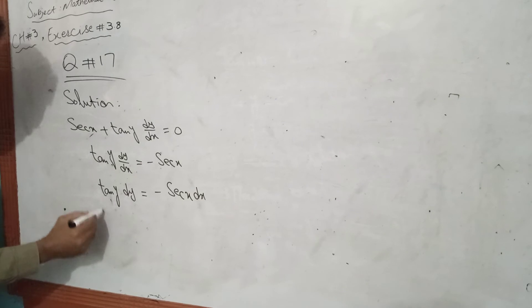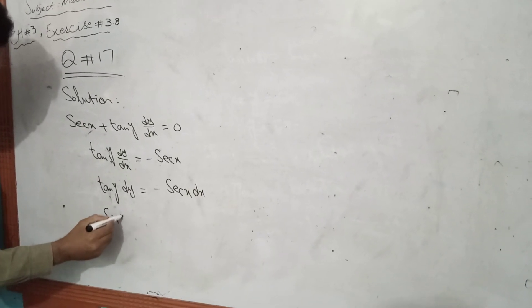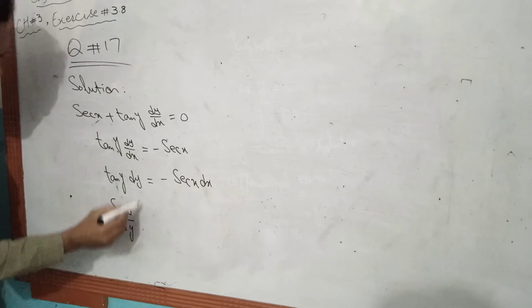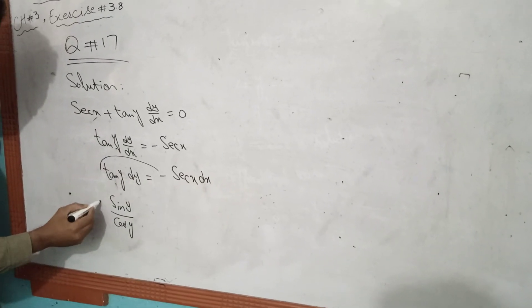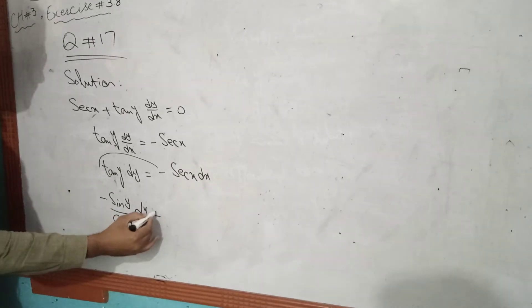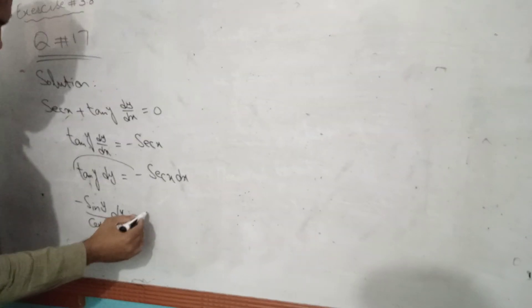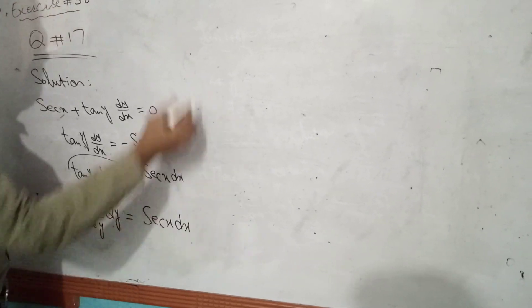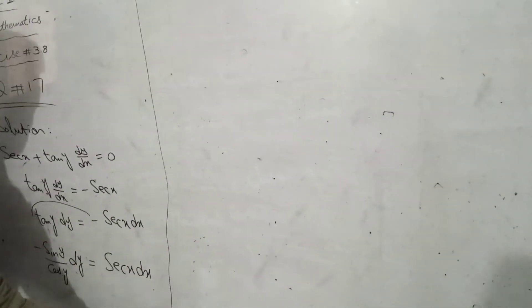This minus is going to be the difference. We can see sin y over cos y. This minus is going to shift into dy equals to second x dx.